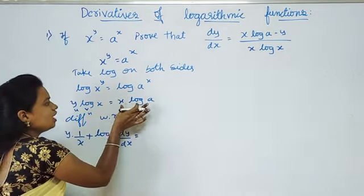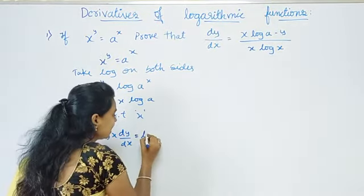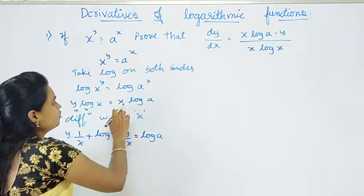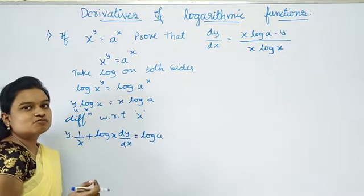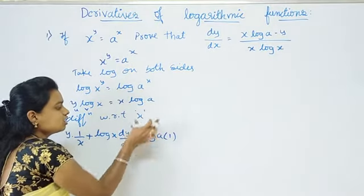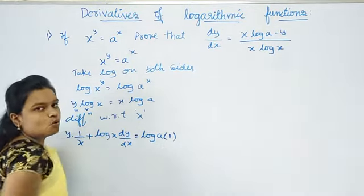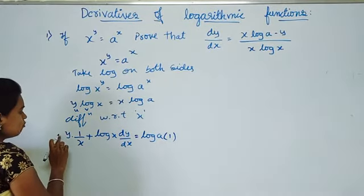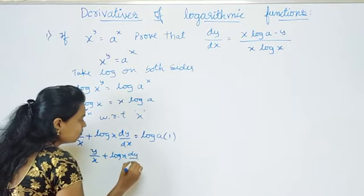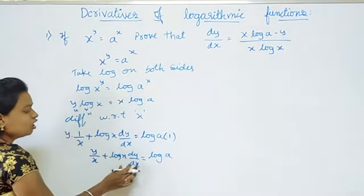On the right side we have x log a. Since a is a constant, log a is also a constant. So we differentiate x only. Differentiation of x with respect to x is 1. Therefore the right side gives log a. So the equation becomes: y by x plus log x into dy by dx equals log a.